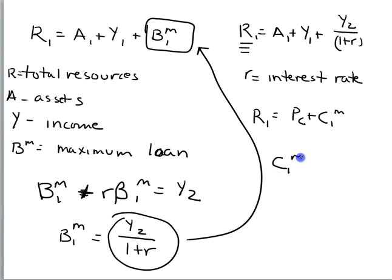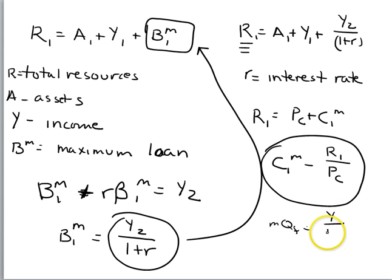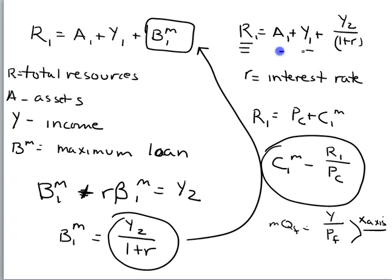Rearranging, maximum consumption in year one equals resources in year one over the price of consumption. This is the x-intercept — total resources divided by the price of consumption, a composite price. This is no different than the maximum quantity of food equaling Y over the price of food. We've just complicated it slightly by saying resources equal not only income, but income plus assets plus the amount you can borrow, divided by the price of consumption.